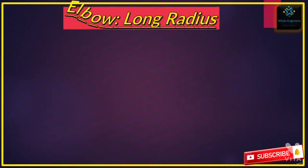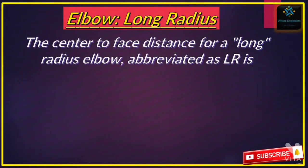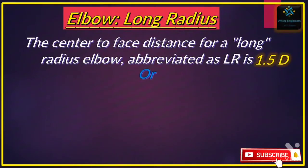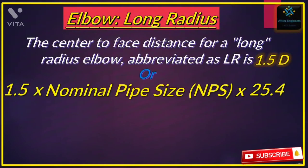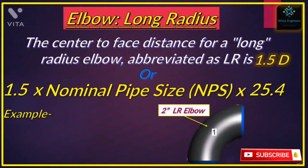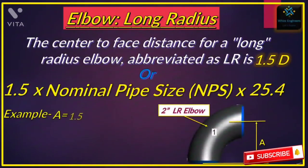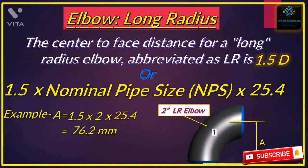First we will see the long radius elbow. The center-to-face distance for a long radius elbow, abbreviated as LR, is 1.5D. If you calculate it in mm, it will be 1.5 multiplied by the nominal pipe size multiplied by 25.4, because 25.4 mm is equal to 1 inch. For example, if we have a 2-inch LR elbow, the center-to-face distance A is equal to 1.5 × 2 × 25.4, so A equals 76.2 mm.